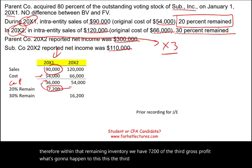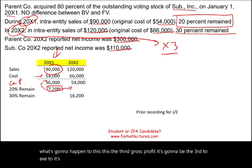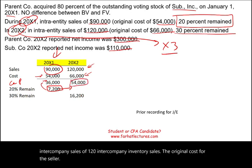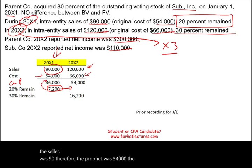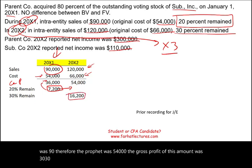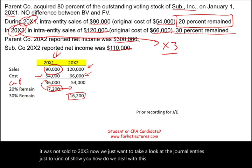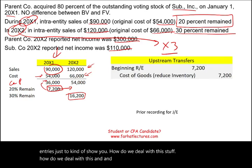That $7,200 deferred from X1 will be recognized in X2. In X2, intercompany sales were $120,000 with an original cost of $90,000 for the seller, giving gross profit of $54,000. Since 30% remained unsold, 30% of $54,000 equals $16,200, which must be deferred into 20X3. Now let's look at the journal entries to understand how we handle this.